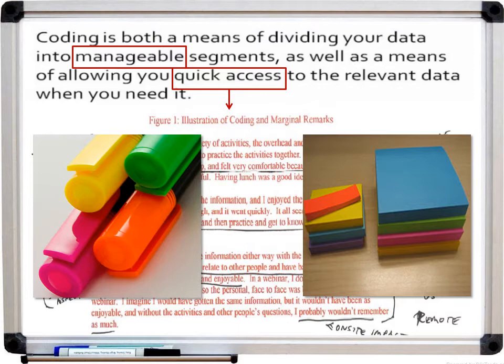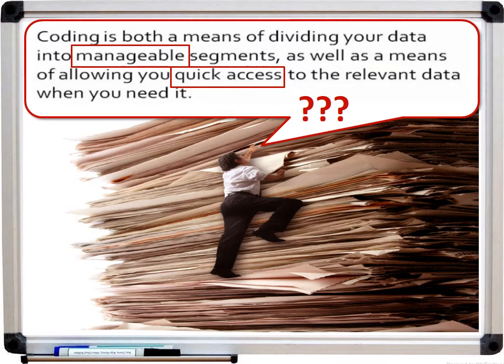Maybe you decide to use different colored post-it notes for each node — again, finite colors of post-it notes may become a problem, and you're going to stick those on your piles of paper in a room dedicated to your research project. But what if one of those post-it notes falls on the floor and you don't remember where it goes? You may start to feel overwhelmed, and this is where using an analysis software such as NVivo or Atlas TI begins to look very appealing.